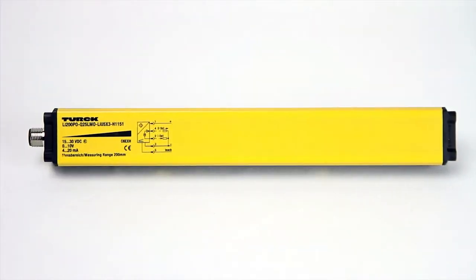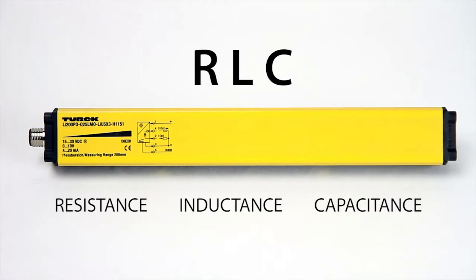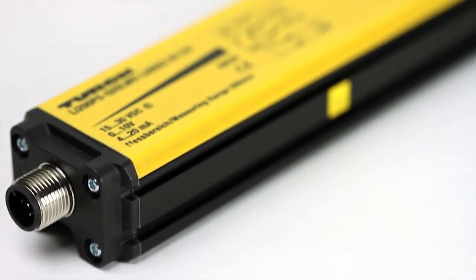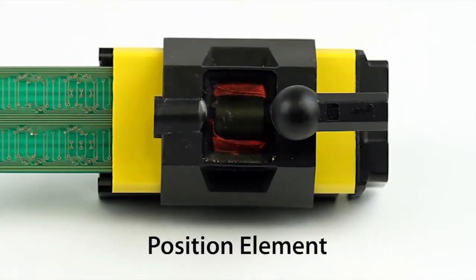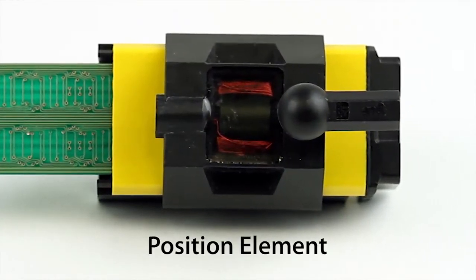One linear inductive measurement technology uses the RLC, Resistance Inductance Capacitance, principle to give more accurate and faster position feedback than ever before. This RLC circuitry makes use of emitter and receiver coils on a printed circuit board. The position element contains an inductor and a capacitor.